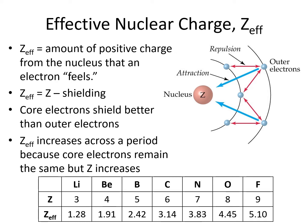Effective nuclear charge increases across a period because the number of core electrons, and therefore the shielding, remains the same, while the number of protons increases. For example, the elements lithium through fluorine all have a helium noble gas core, so there are two electrons creating shielding in each of those elements. As you go across the periodic table from lithium to fluorine, the number of protons increases from three through nine. Notice the effective nuclear charge also increases across the row, but the value of the effective nuclear charge is smaller than the atomic number, because shielding makes the electron on the outside feel less than the full amount of positive charge.